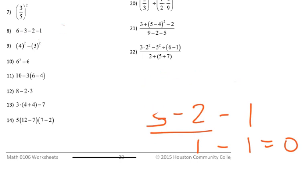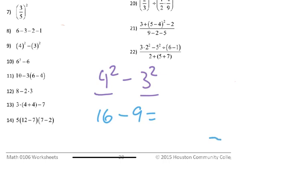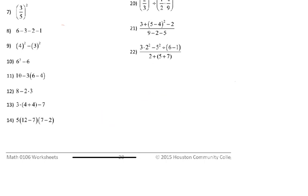Number nine is 4 squared minus 3 squared. Do exponents first: 16 minus 9. 16 minus 9 is 7, because 9 plus 7 is 16. Number ten is 6 squared minus 6. 6 squared is 36, so 36 minus 6 is 30. Notice I did exponents before subtracting, because of PEMDAS.